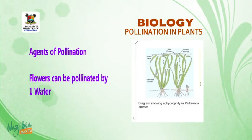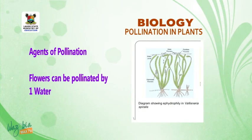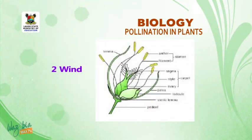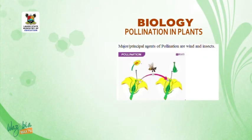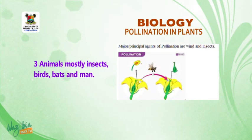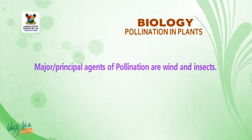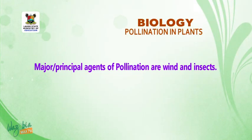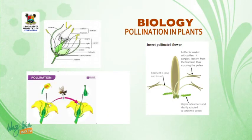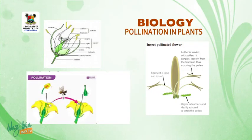Now let's look at the agents of pollination. Flowers can be pollinated by: 1. water, 2. wind, 3. animals — mostly insects, birds, bats, and man. Out of these agents, the major or principal agents of pollination are wind and insects. Look at the pictures of wind-pollinated flowers and insects, and note your observations. We will go on break now and will be back shortly.